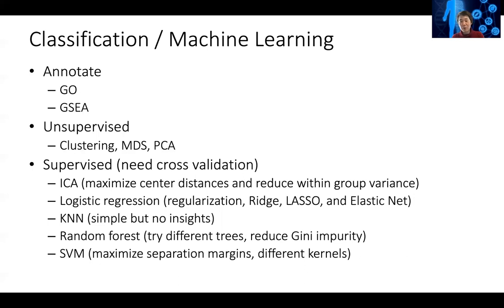Ridge regression uses L2 penalty, where the penalty is assessed as the square of the coefficients. Lasso uses L1 penalty, where the penalty is assessed at the absolute coefficient level. Elastic net is a mix of the two, and you evaluate how much to use ridge versus lasso based on cross-validation.